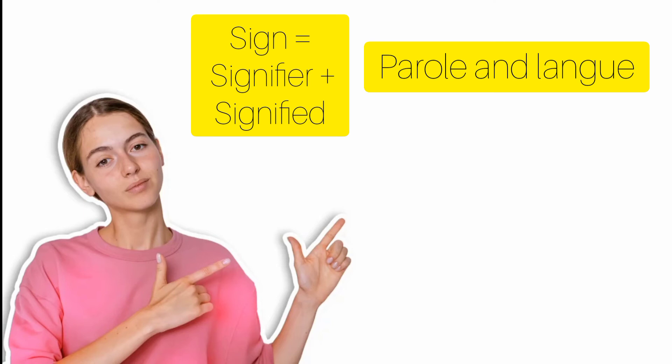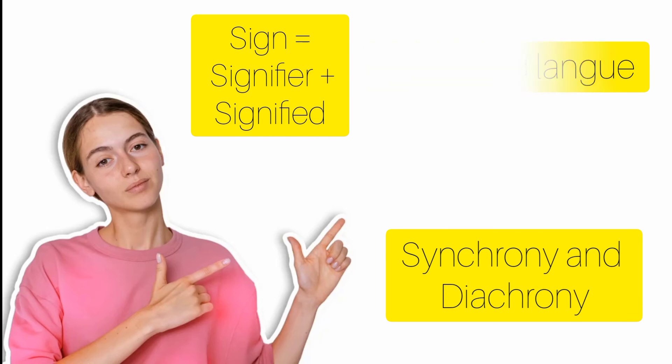Then, syntagmatic and paradigmatic—syntagmatic relationships and paradigmatic relationships. I have made a video in the description box. The fourth postulate was Synchrony and Diachrony—descriptive linguistics and historical linguistics. Synchrony and Diachrony linguistics. I have made a video in the description box.